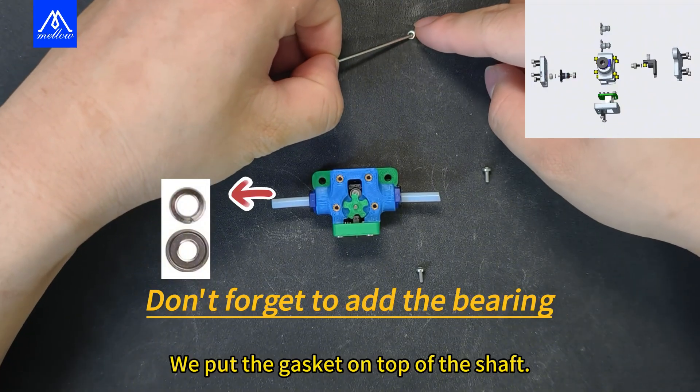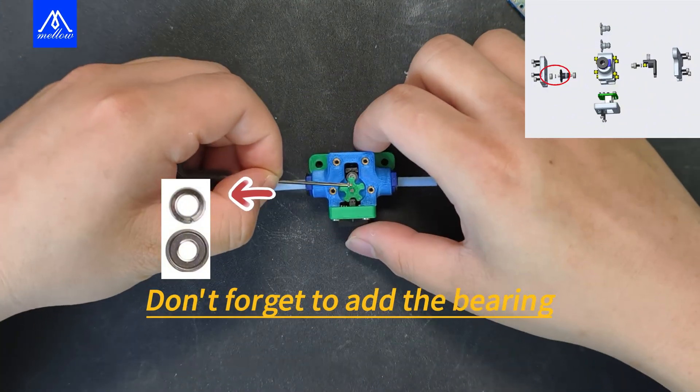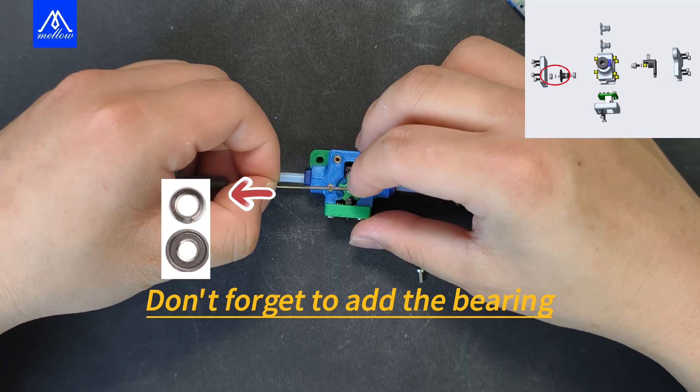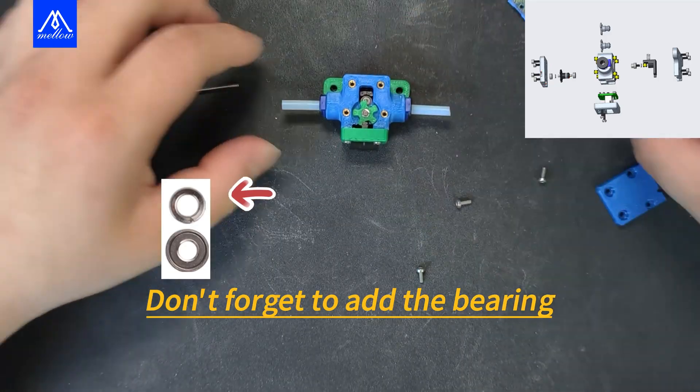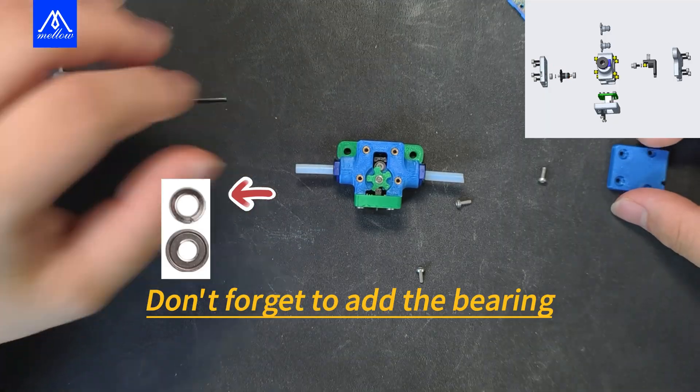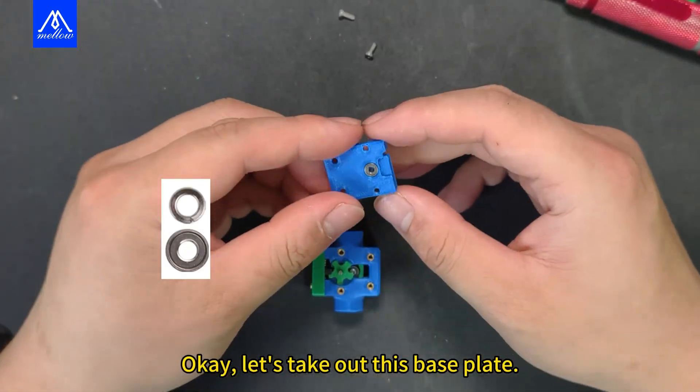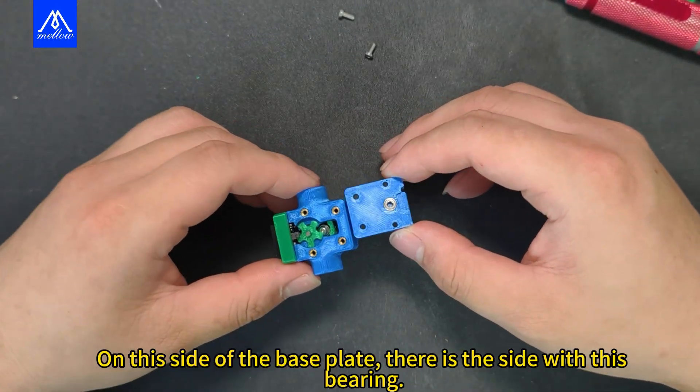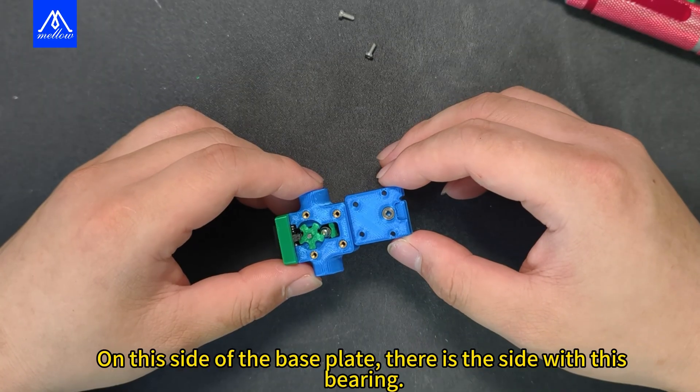We put the gasket on top of the shaft. Let's take out this base plate. On this side of the base plate, there is the side with this bearing.